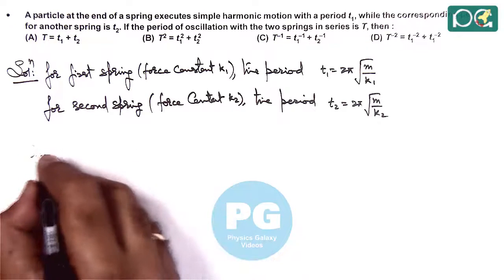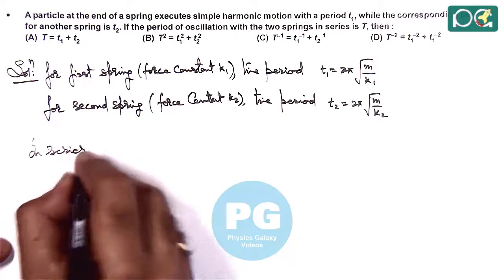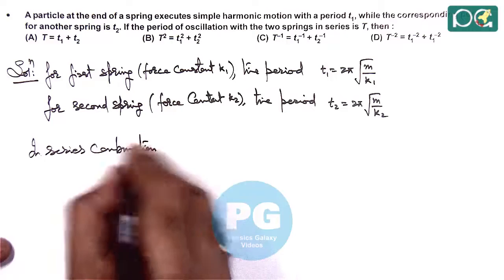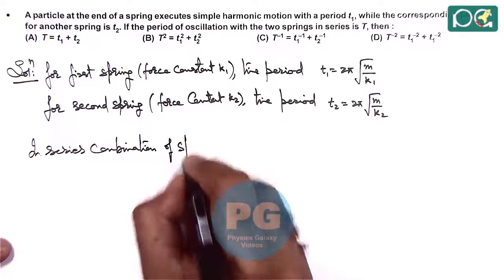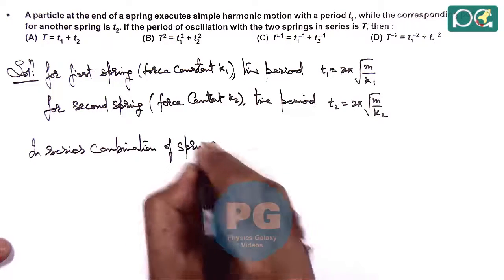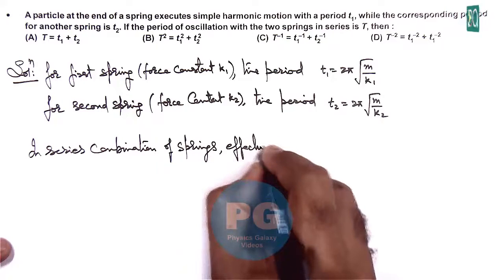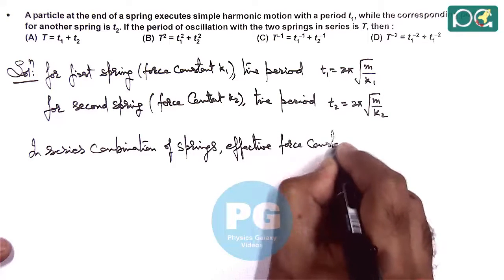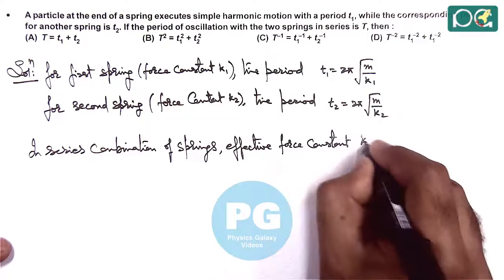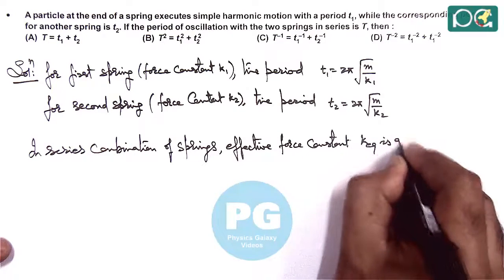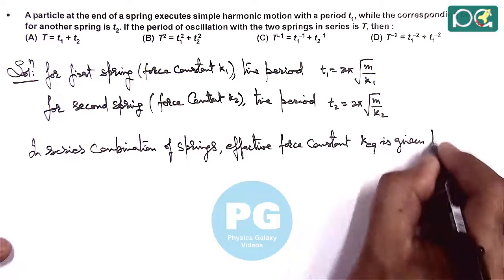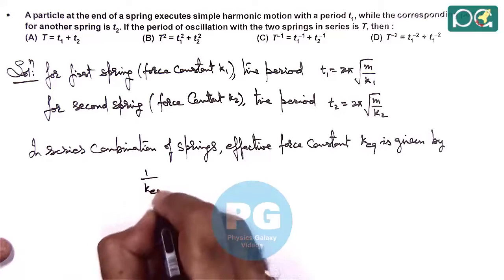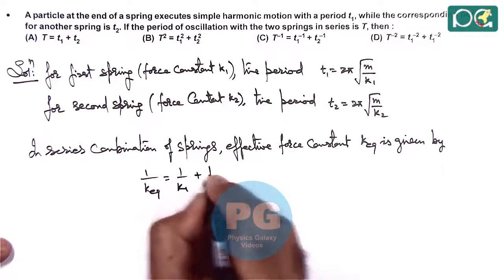In series combination of springs, the effective force constant k_eq is given by 1/k_eq = 1/k1 + 1/k2, as already discussed in theory.